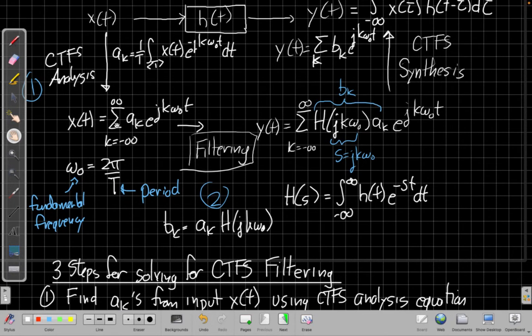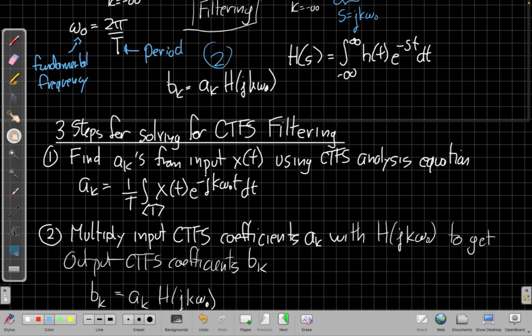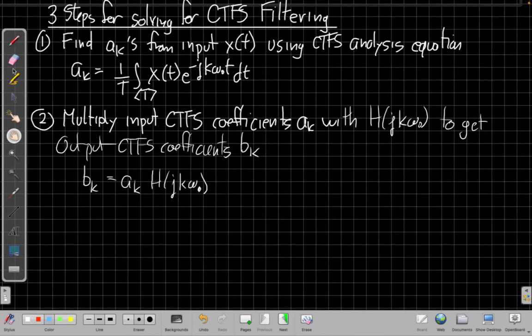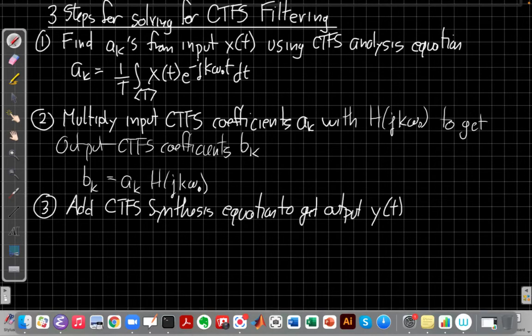And the third step is the synthesis step, that we're going back, now that we have the b_k's, we put them into this sum. And we're adding them up to get back to our equation in the time domain y(t). So let's pull that down here. So we get the output y(t) by adding the synthesis equation.